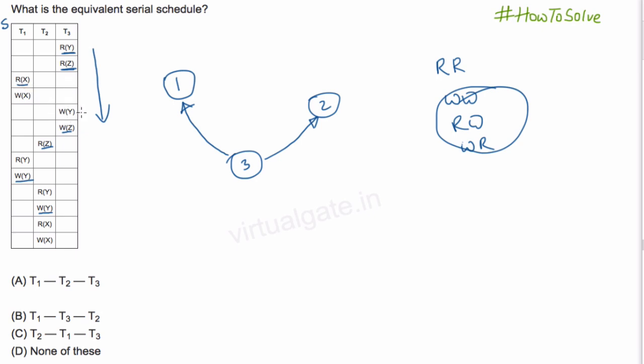Now, read x. Let us find out whether we have any conflicting operation with this read x. Here it is read x. Here it is write x. We have on the same variable x we have write. This read and this write is conflicting operation. We have one edge from transaction 1 to transaction 2. Similarly, we can keep on checking. This is the final graph which we will get. I have already solved.